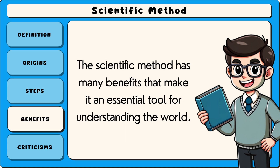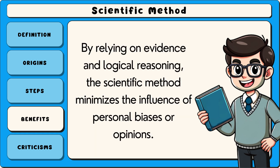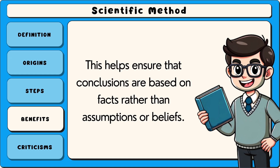The scientific method has many benefits that make it an essential tool for understanding the world. One major benefit is its objectivity. By relying on evidence and logical reasoning, the scientific method minimizes the influence of personal biases or opinions, helping ensure that conclusions are based on facts rather than assumptions or beliefs.